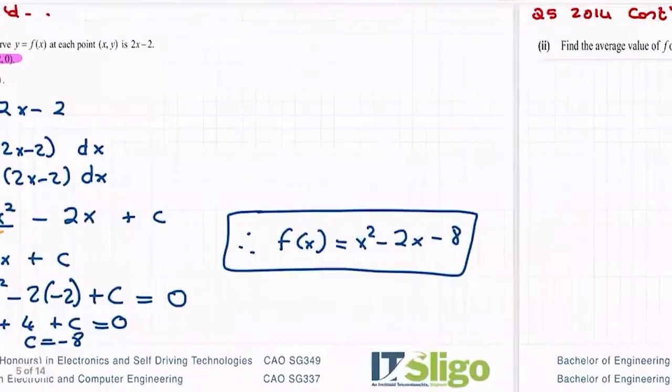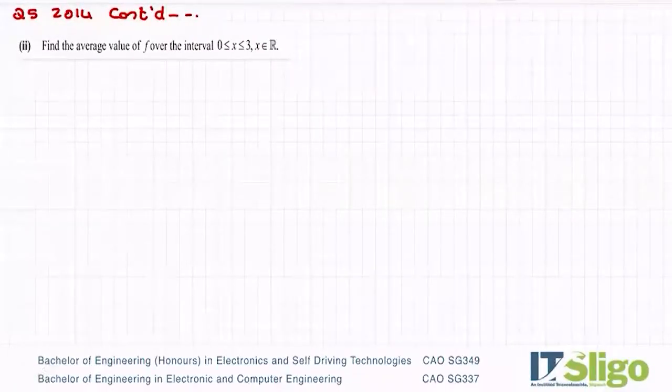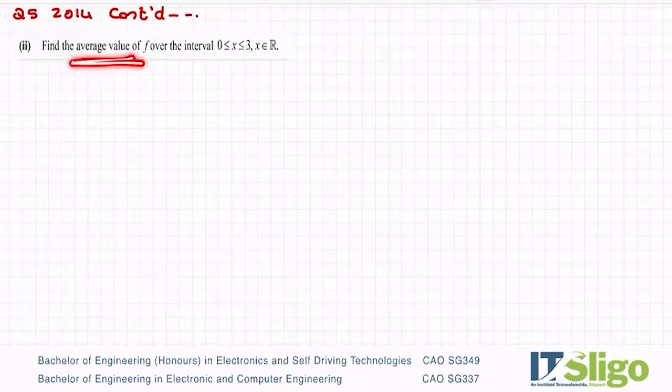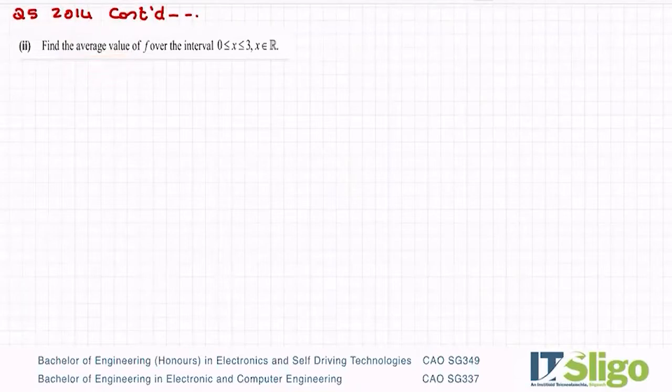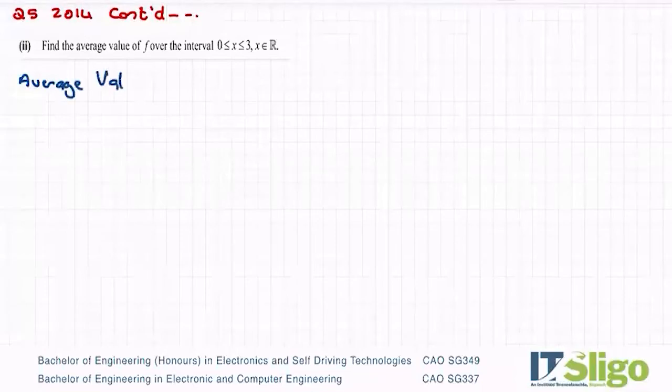And then part two of that question. Find the average value of f over the interval 0 is less than or equal to x is less than or equal to 3. So very important part of integration. And this could come up in any question. It is often put on as the last part of a question and it really could be any question. Look out for those two keywords, average value, and in many cases you do it through integration. There's a formula you have to learn off for it. It is not in the log tables. It's one of the few that's not. And it is 1 over b minus a, the integral between a and b of f of x dx.